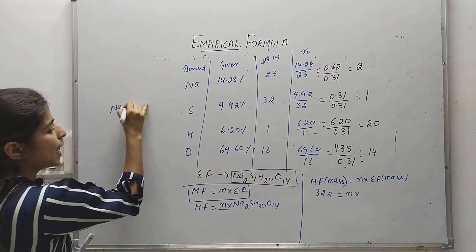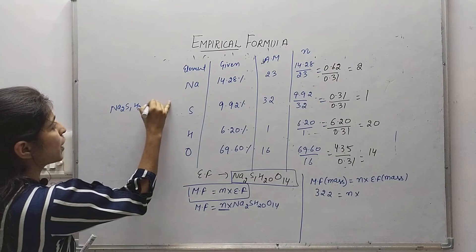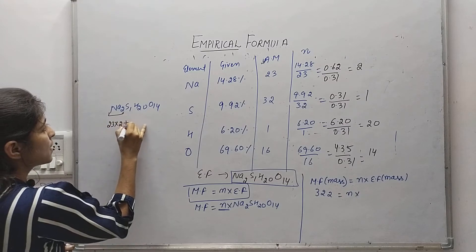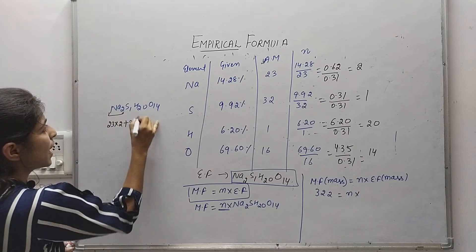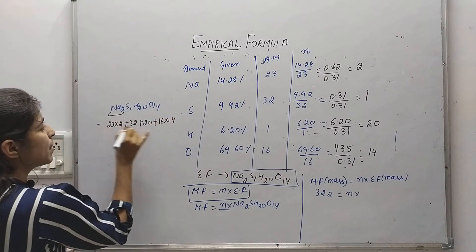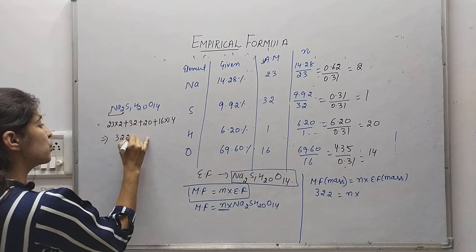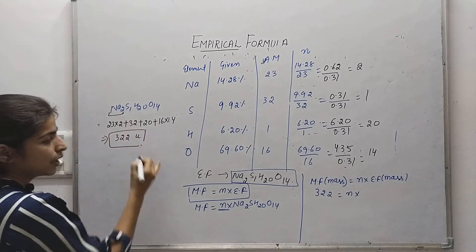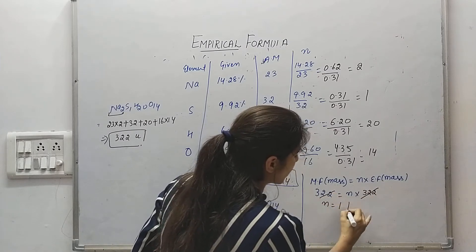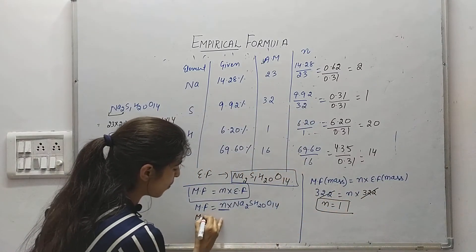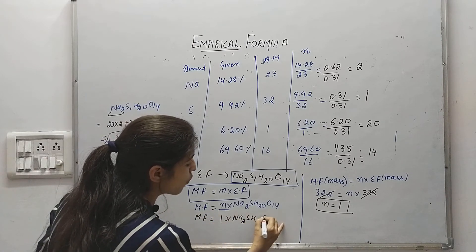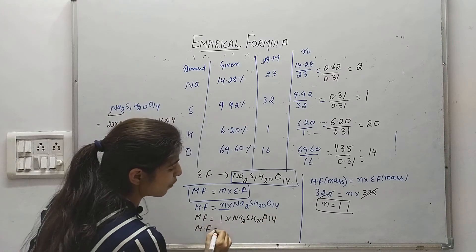Calculating the empirical formula mass for Na2S1H20O14: sodium (23×2) + sulfur (32) + hydrogen (1×20) + oxygen (16×14) = 46 + 32 + 20 + 224 = 322 amu. So n = 322/322 = 1. Therefore, molecular formula = empirical formula = Na2SH20O14.